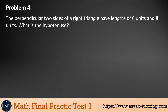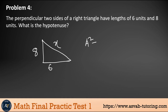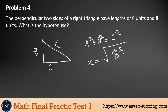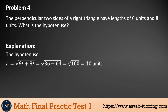Problem 4: The two perpendicular sides of a right triangle have lengths of six and eight units. Find the hypotenuse using the Pythagorean theorem: a² + b² = c². So x = √(6² + 8²) = √(36 + 64) = √100 = 10 units.